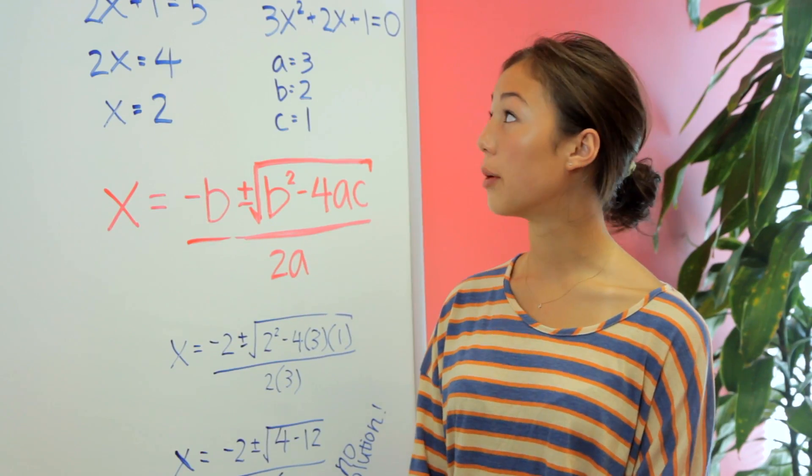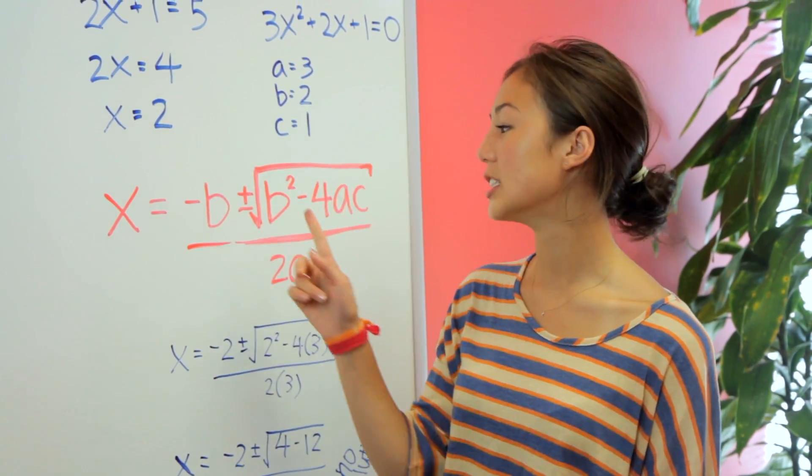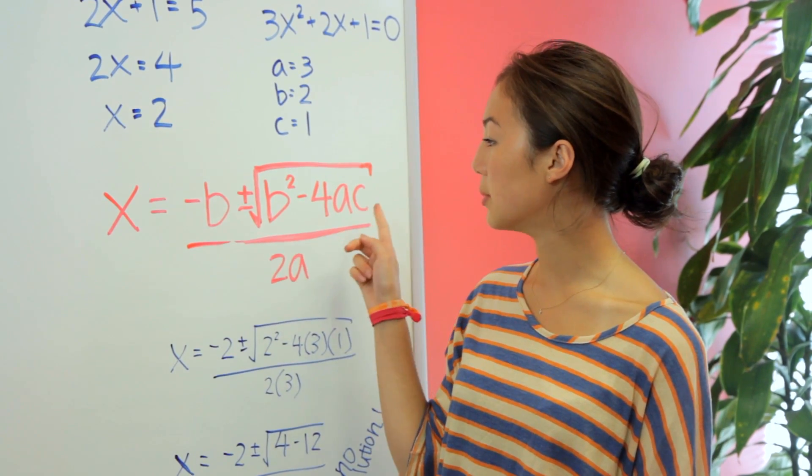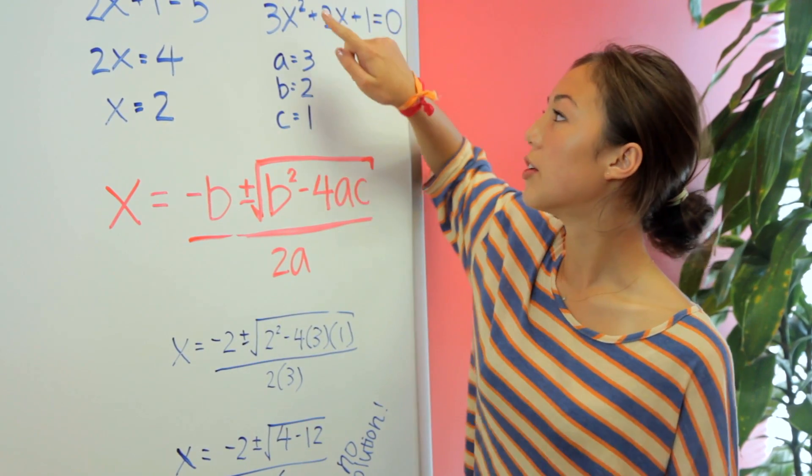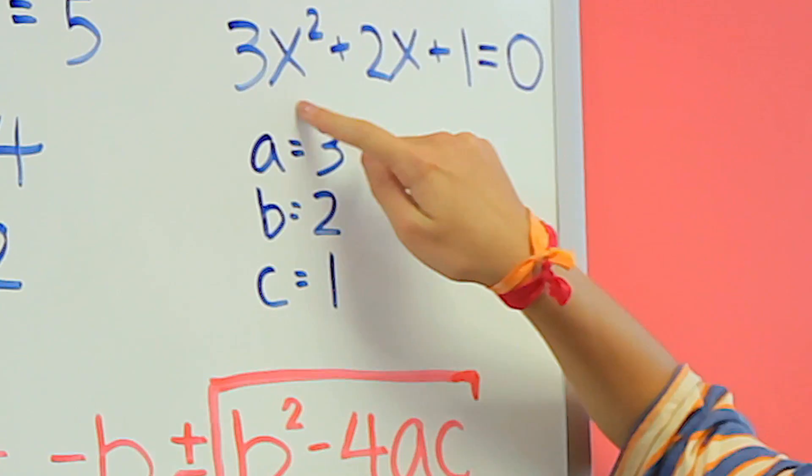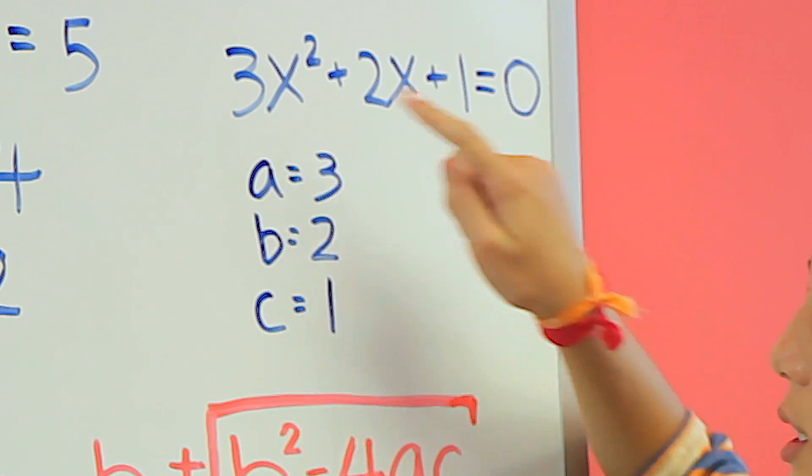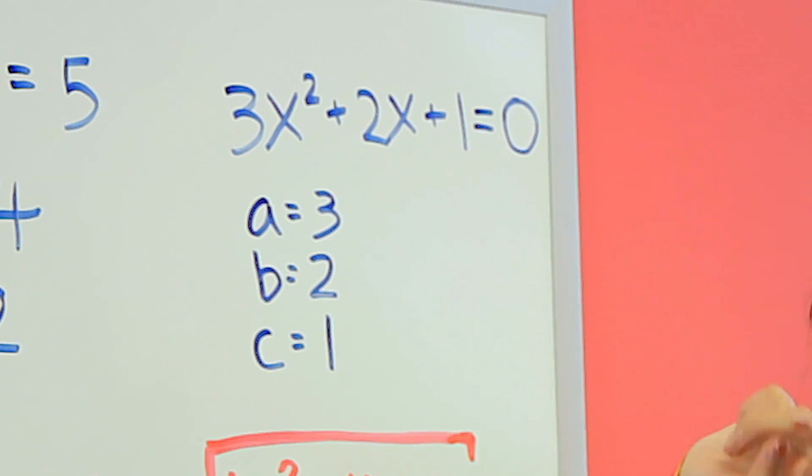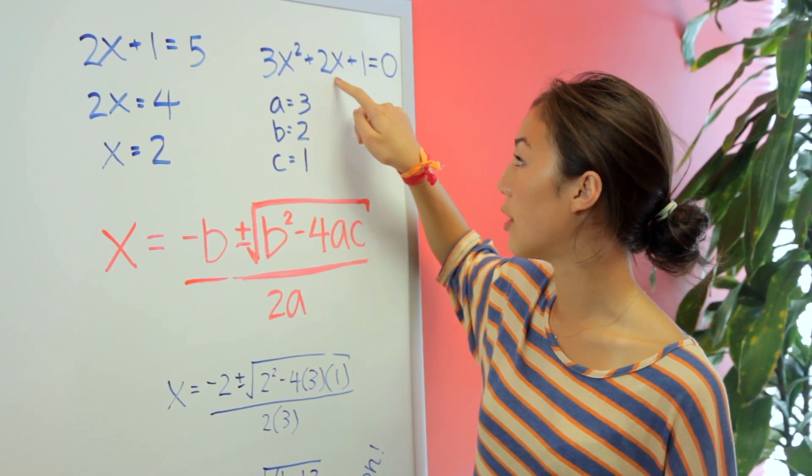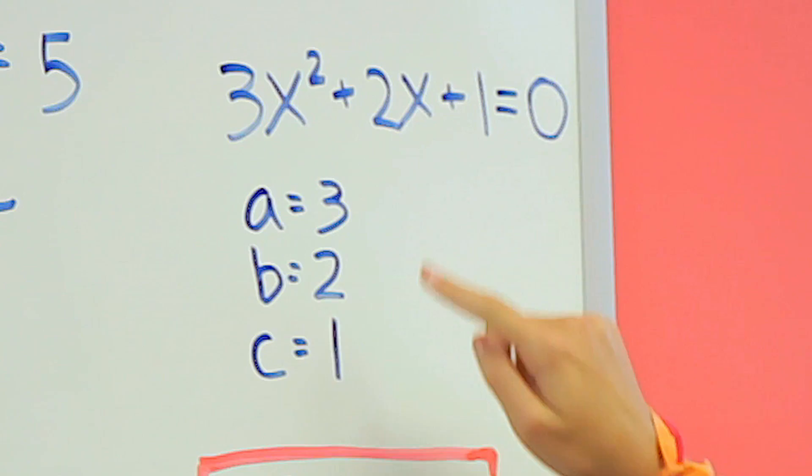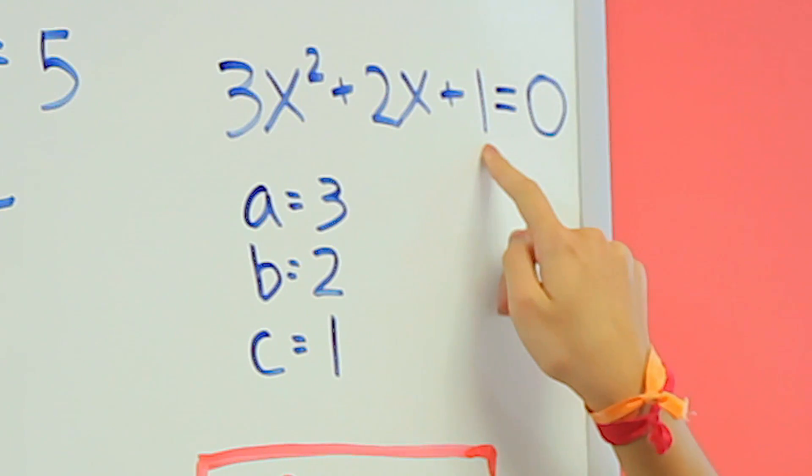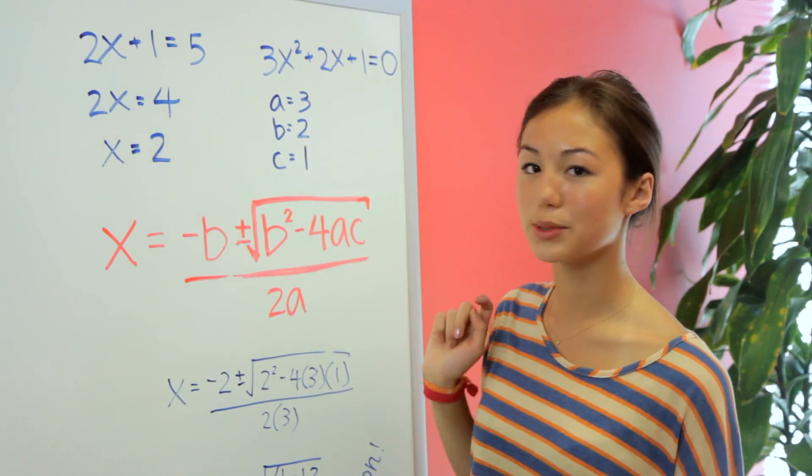To use this formula, we're going to plug in the values from our equation into the variables a, b, and c. a is going to be the variable in front of the x with an exponent, so we have a equals 3. b is going to be the variable in front of just plain x, so we have b equals 2. And 1 is the coefficient, so c equals 1.